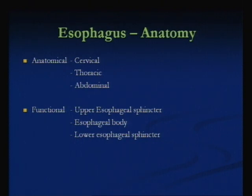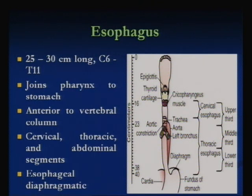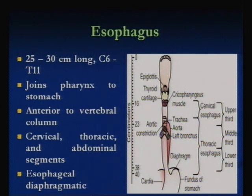Anatomically the esophagus is divided into three parts: cervical, thoracic, and abdominal. Functionally it is divided into the upper esophageal sphincter, the esophageal body, and the lower esophageal sphincter. The esophagus starts at the cricopharyngeal junction at the level of C6 vertebra, then pierces the diaphragm at the esophageal hiatus at the level of T11, slightly to the left of the midline. It is about 25 to 30 centimeters long, lies anterior to the vertebral column, and has cervical, thoracic, and abdominal segments.